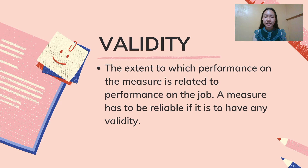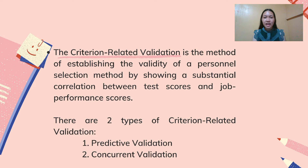Validity is the extent to which performance on the measure is related to performance on the job. A measure has to be reliable if it is to have any validity — if we keep getting different results, then it is not going to be valid. The criterion-related validation is the method of establishing validity by showing a substantial correlation between test scores and job performance scores. An applicant will be tested now, and their results will serve as a predictor of future performance. Those who scored higher should perform better, and those who scored lower should perform less well on the job.